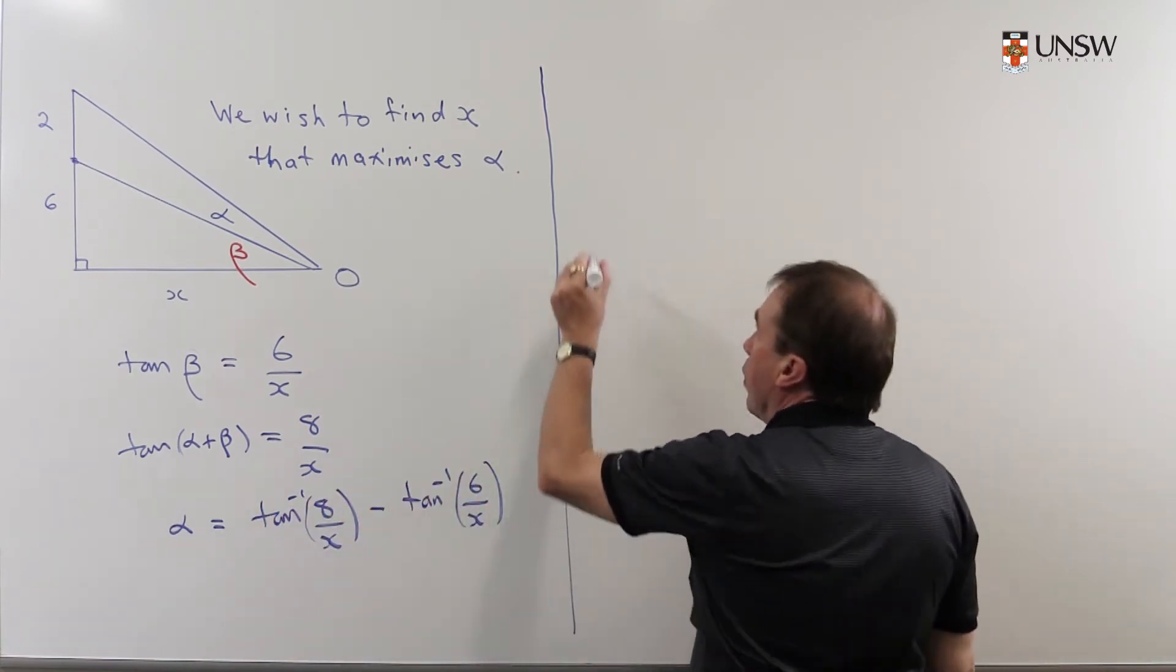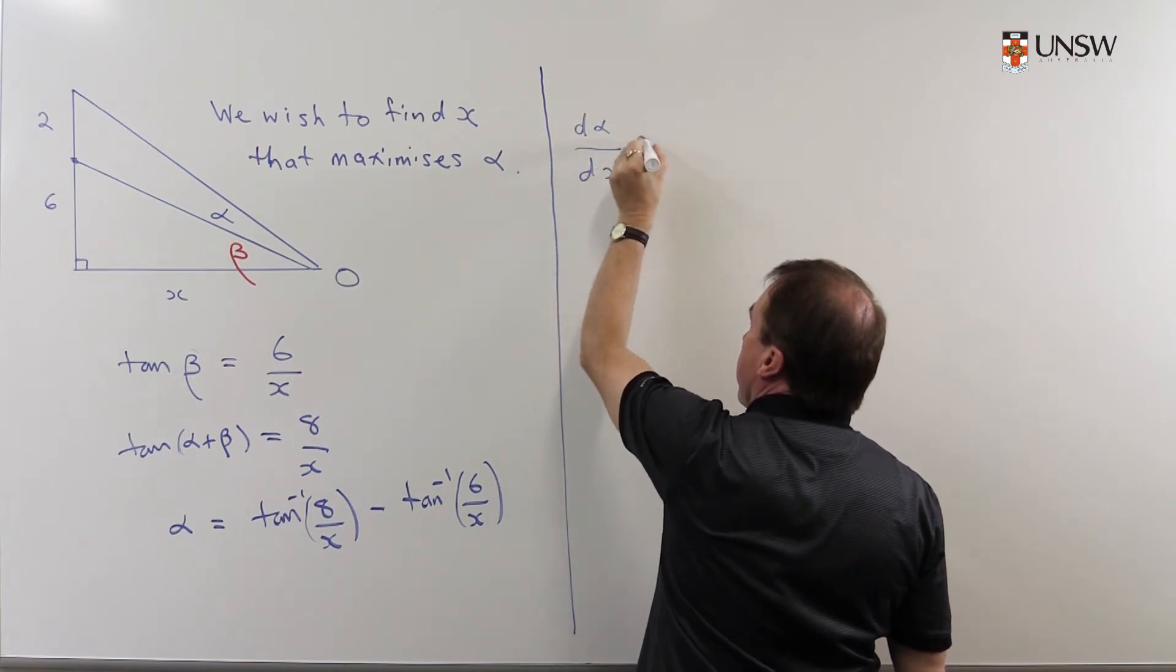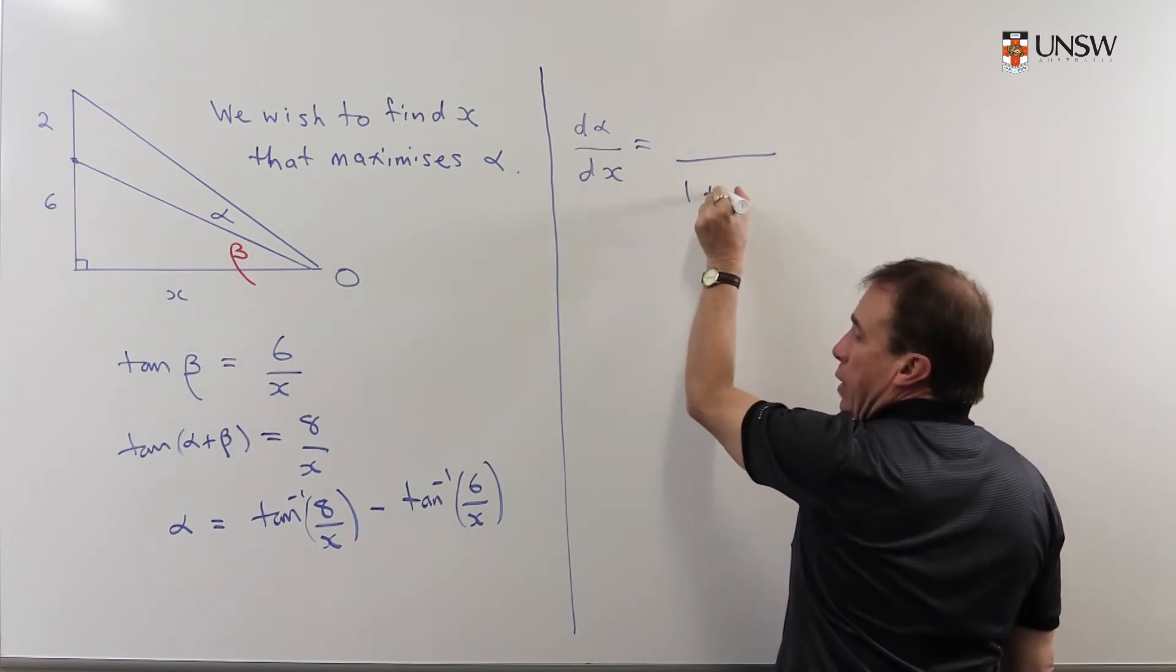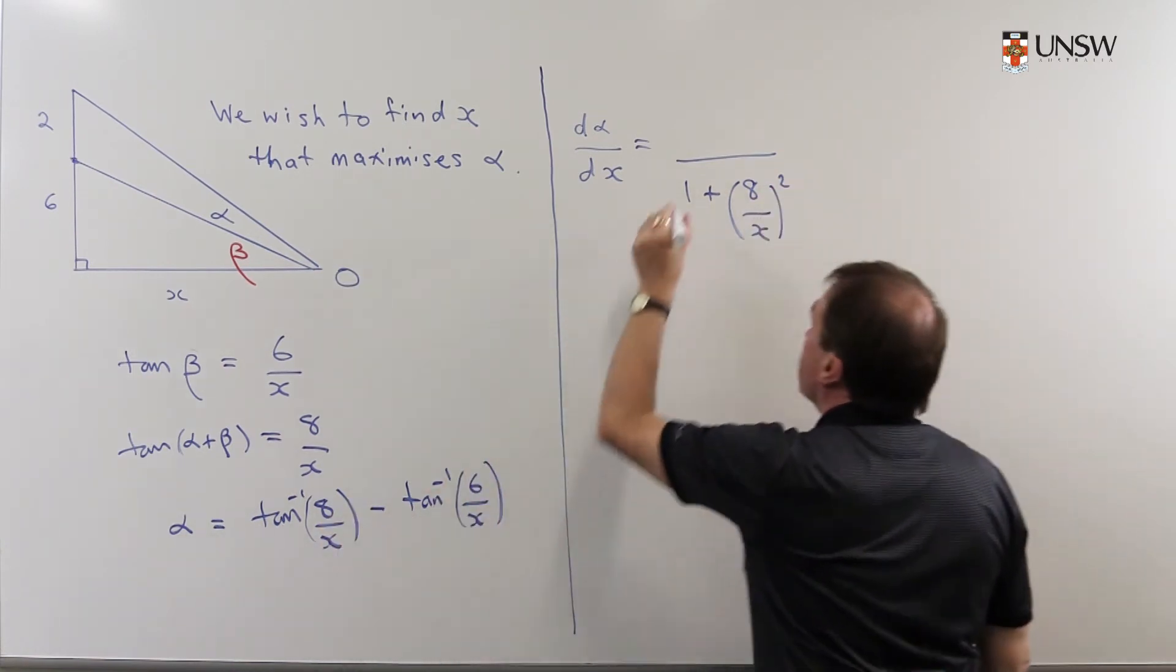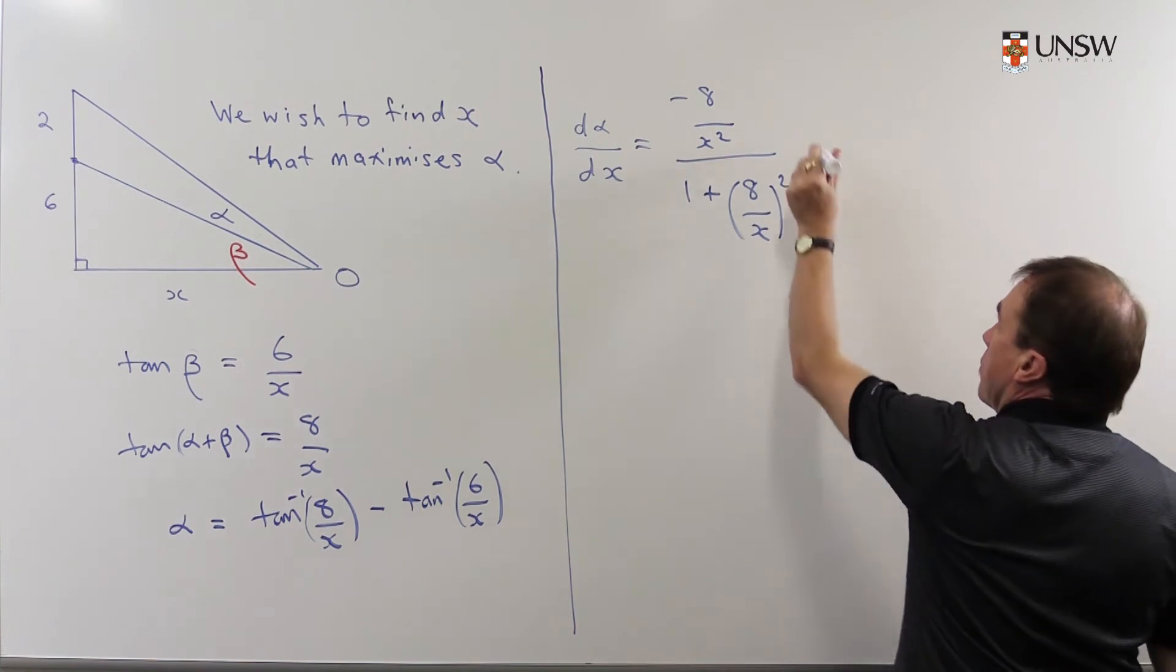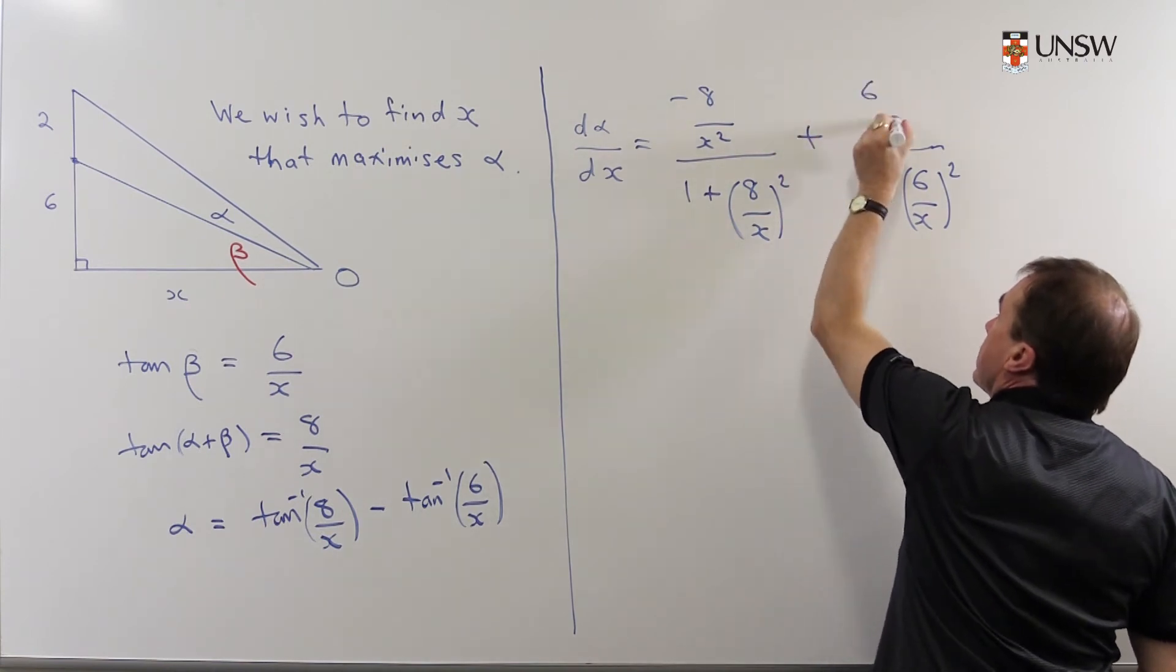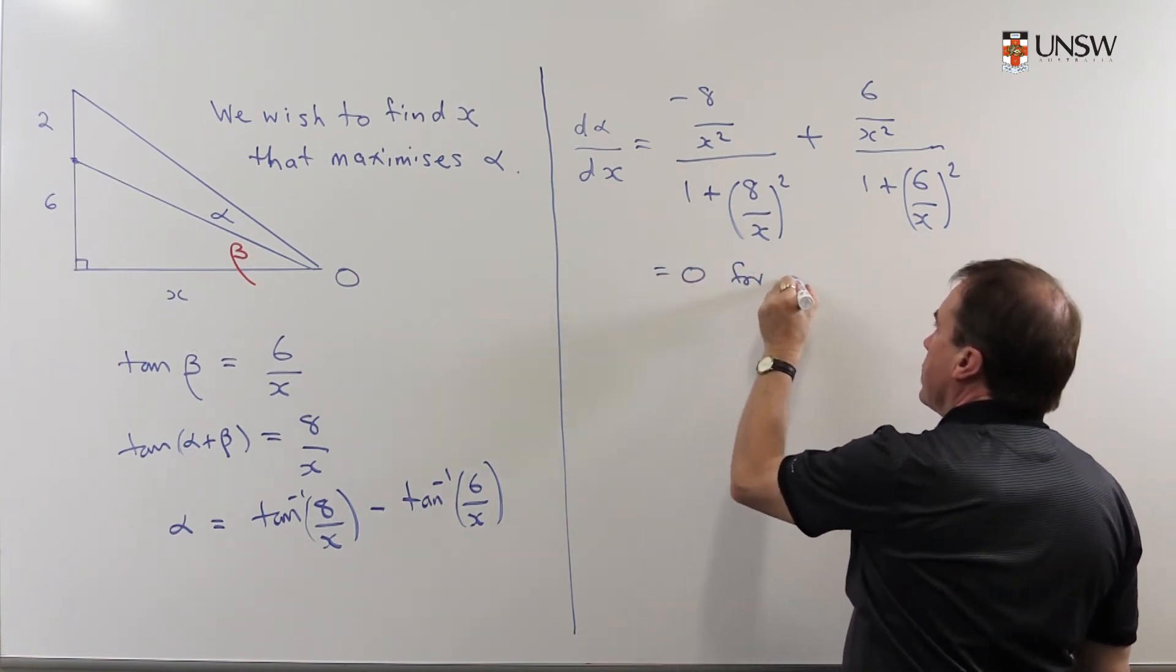So I'm now going to take the derivative. I'm trying to maximize alpha, so I'm going to take the derivative dα/dX and just use my properties of inverse tangent derivatives plus the chain rule for the inside. The derivative of inverse tan of anything is you write 1 over whatever that quantity is squared, and the chain rule says you've got to multiply by the derivative of the inside, which is -8/X². I do the same with this one, so I've got minus, and I do 1 + (6/X)² and then I'm going to multiply by the derivative of 6/X, which is -6/X², and we're going to put that equal to zero for a stationary point.